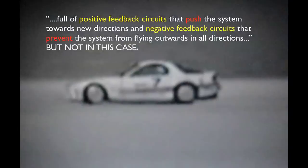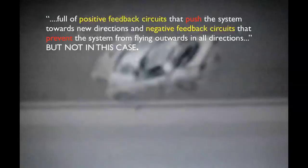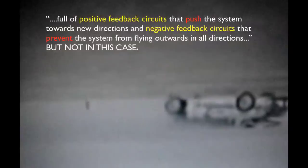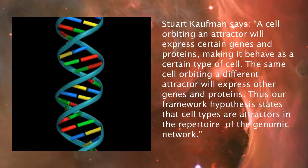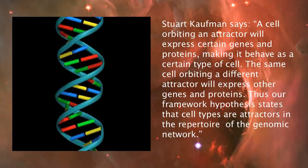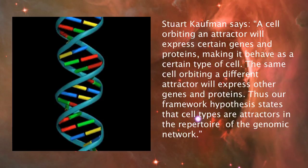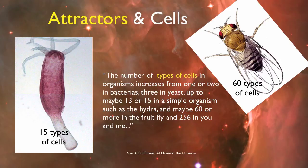Usually, the trajectory of a car on the road describes an attractor — regardless of the conditions, it will stay within certain limits. Now an example when this does not happen: a failure of positive feedback circuits that push the system towards new directions and negative feedback circuits that prevent the system from flying outwards in all directions. In this case, a cell orbiting an attractor will express certain genes and proteins, making it behave as a certain type of cell. The same cell orbiting a different attractor will express other genes and proteins. Thus, our framework hypothesis states that cell types are attractors in the repertoire of the genomic network.